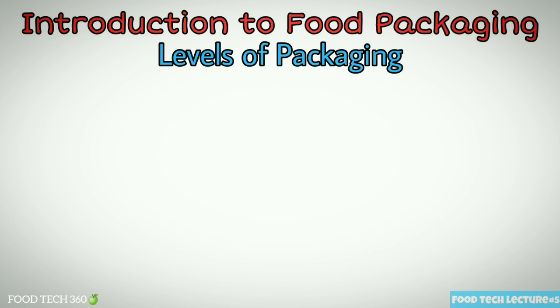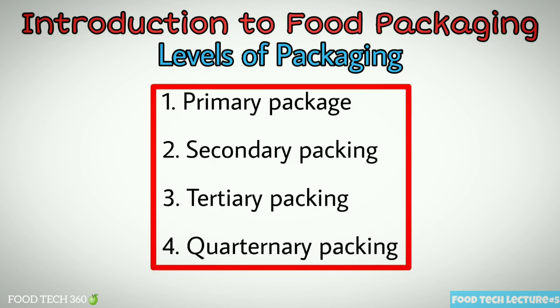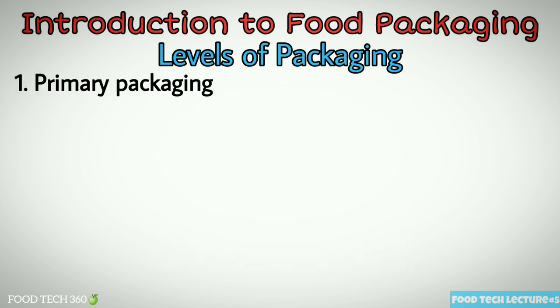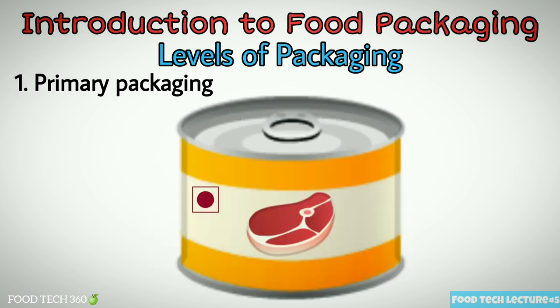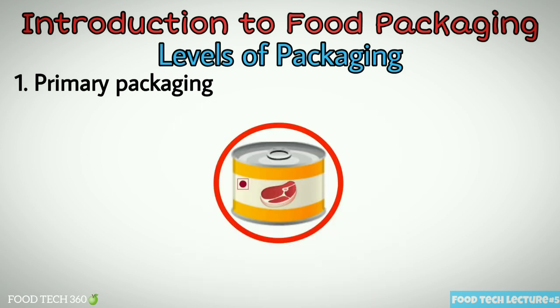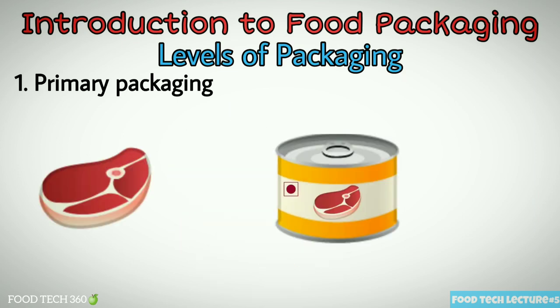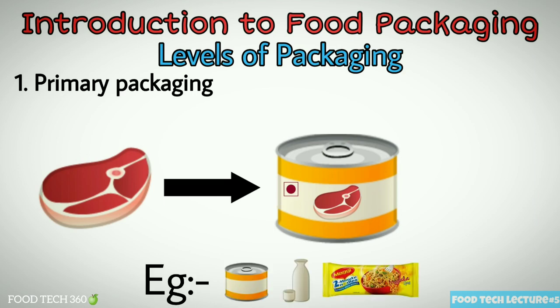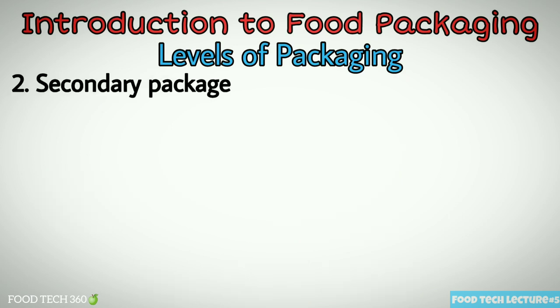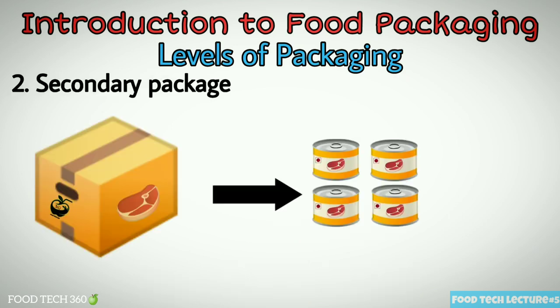Levels of packaging: there are usually four levels — primary package, secondary package, tertiary package, and quaternary packaging. Primary package is one which is in direct contact with the contained product. It provides the initial and usually the major protective cover and has the required barrier properties. The food material is in direct physical contact with the packaging material. Examples: metal cans, glass bottles, and plastic pouches.